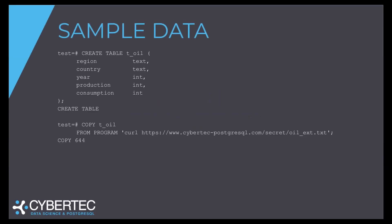For our sample data, we have a very simple dataset on our website. It's basically about oil production. What we have is region, country, year, production, and consumption. If you happen to be a superuser on your system, you can very easily load this data — just say COPY t_oil FROM PROGRAM and use Curl to download it from the website and feed it directly into COPY. If you're not a superuser, you'll have to download the file and import it manually. But it's just a tab-separated file, so you can load it quite easily with any tool of your choice.